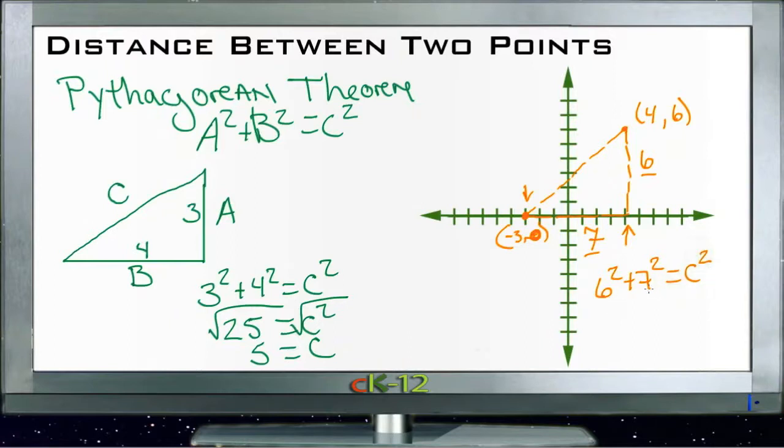36 and 49, that's 85, equals c squared. Take the square root of both sides, and c is approximately 9. That tells us the distance between these two points is 9 units, and that's all there is to it. Let's try applying it to some different examples.